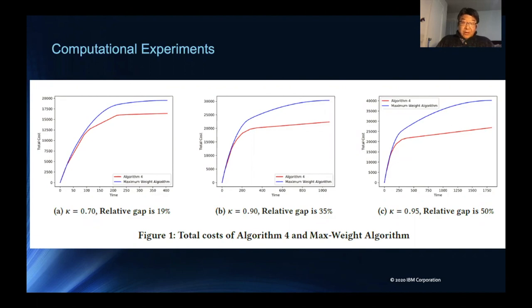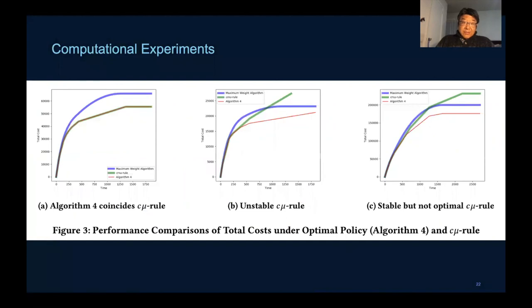Next we fixed kappa equal to 0.9 and compare the performance of the optimal policy against both max weight and the C-mu.